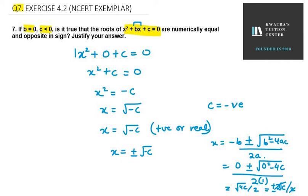Therefore, x value is plus minus under root minus c. So x can take two values: plus under root minus c and minus under root minus c, where we know that minus c is positive.